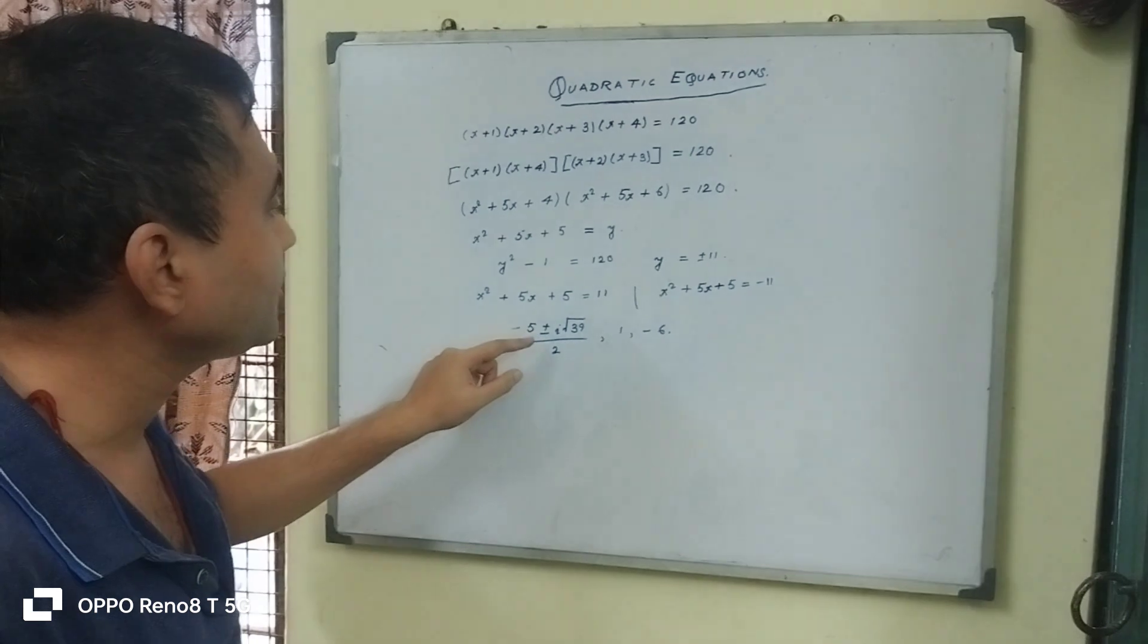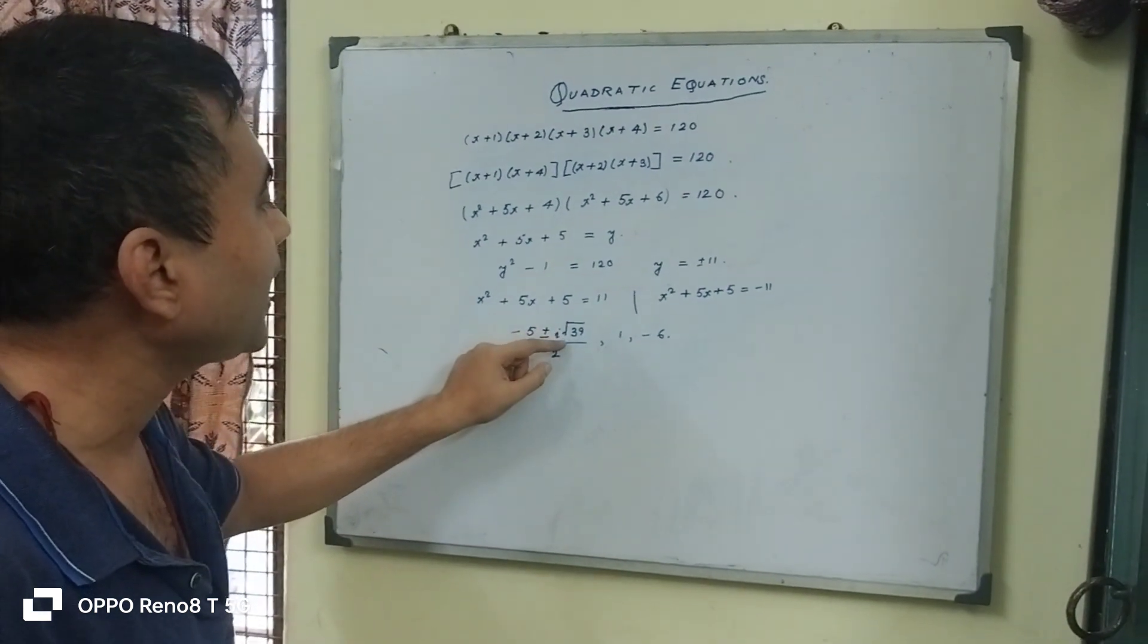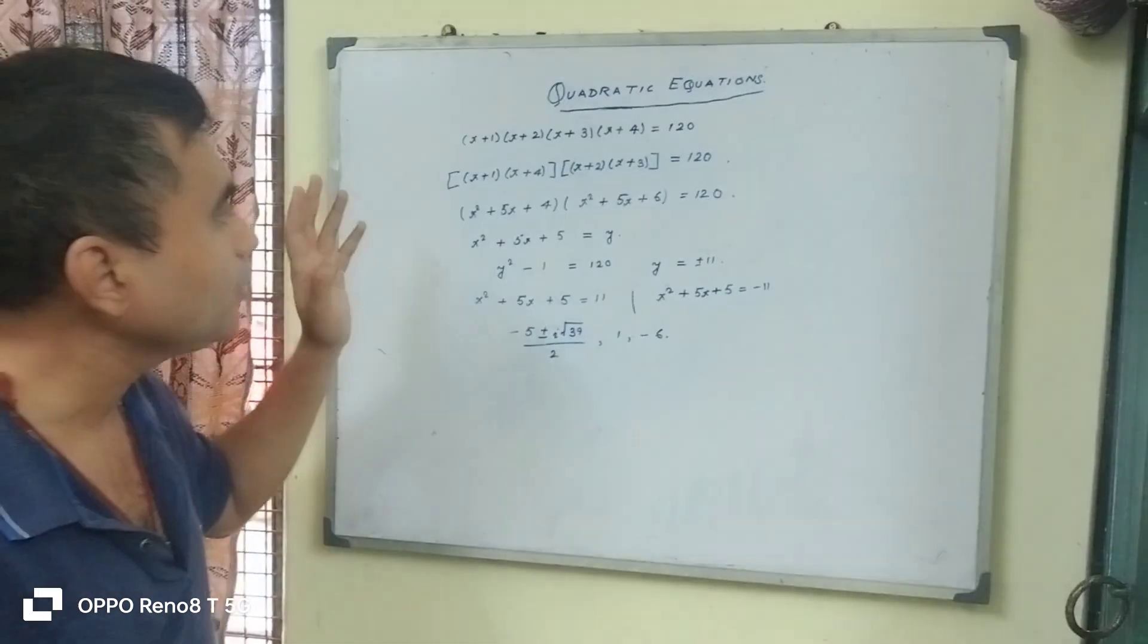Solving here: minus 5 plus minus i root 39 over 2. That is the answer to the problem.